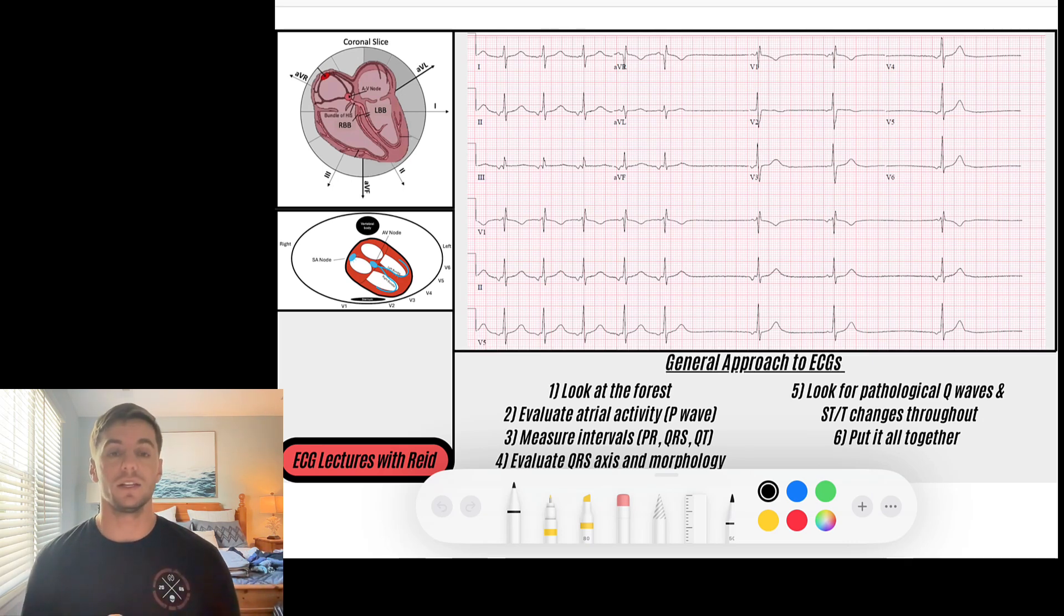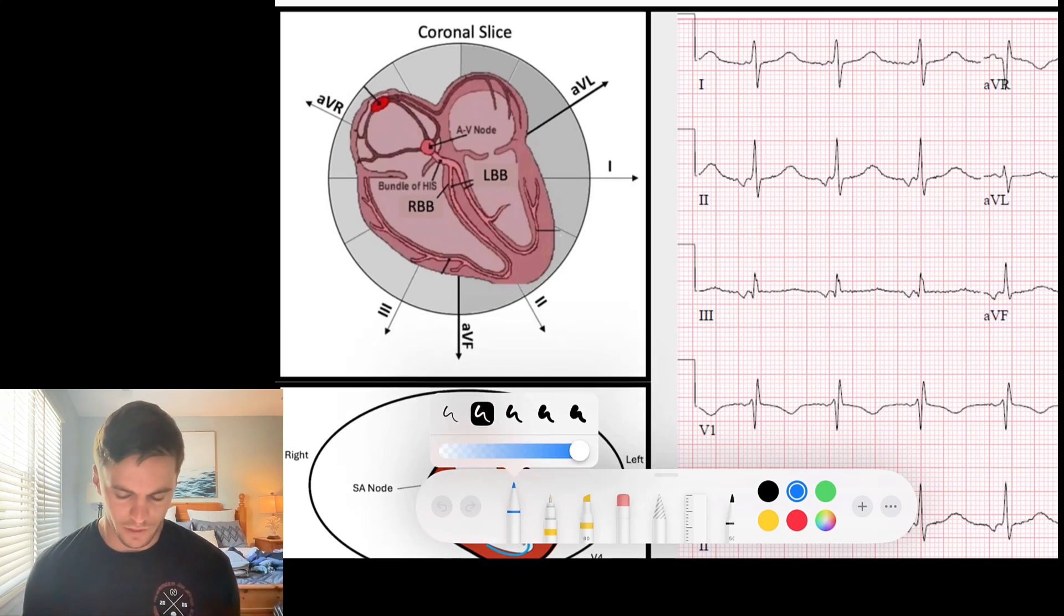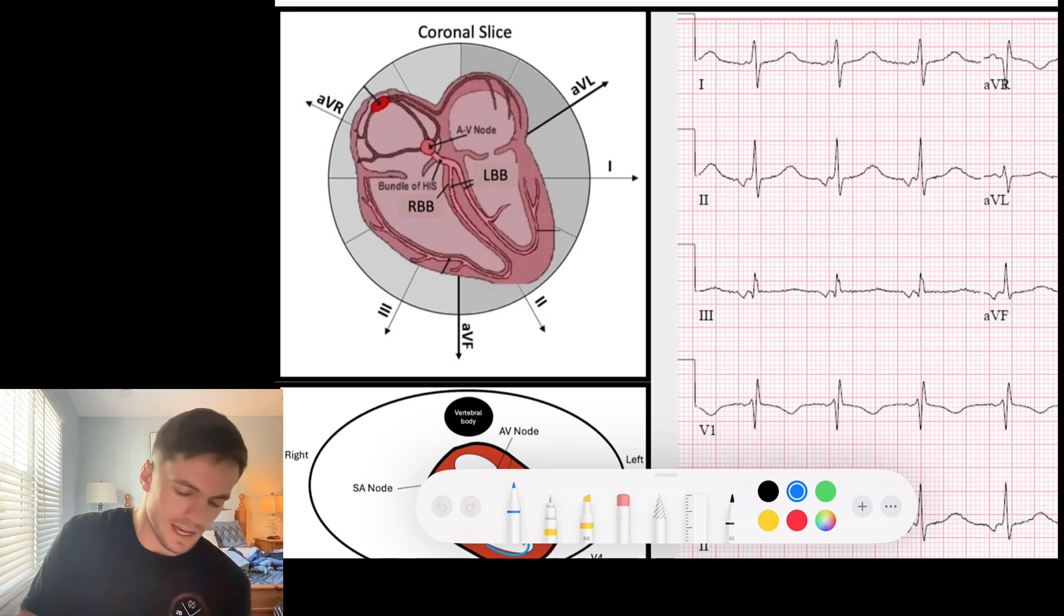So let's jump into it. Remember that the atria typically depolarizes—let's just review the typical depolarizing waveform within the atria. Typical depolarization occurs from the SA node, and the SA node sits high in the right atrium here, and the SA node fires off.